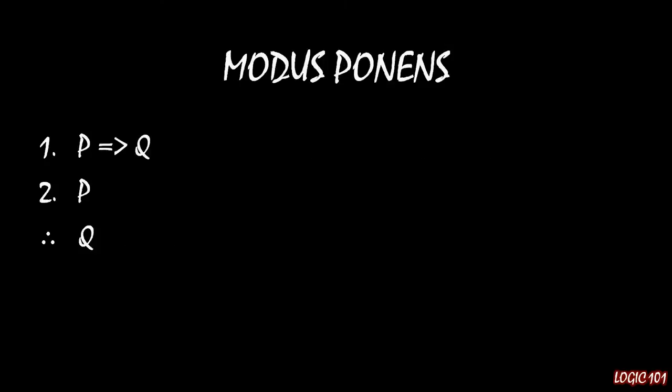You remember modus ponens, right? Modus ponens has two premises: an implication p implies q, and the antecedent of the implication being true. Given those two pieces of information, you can conclude that the consequent is true.